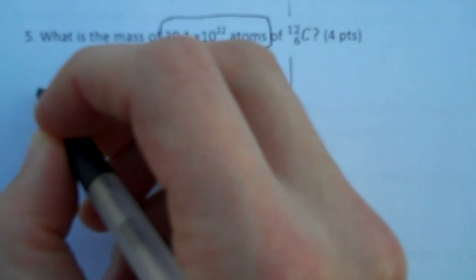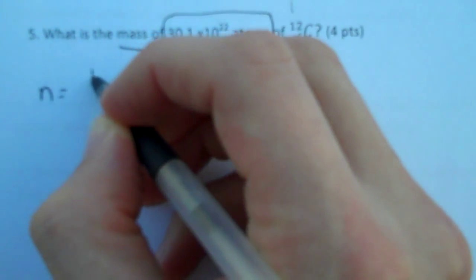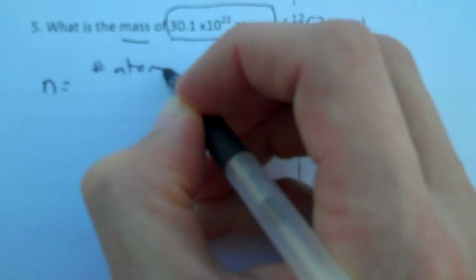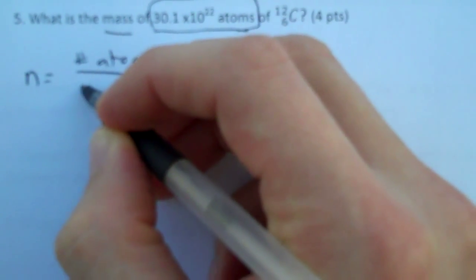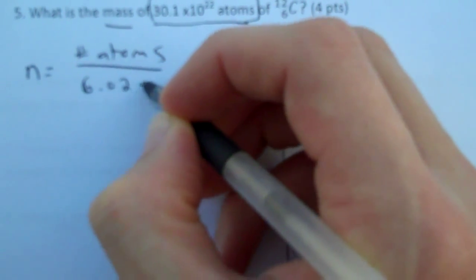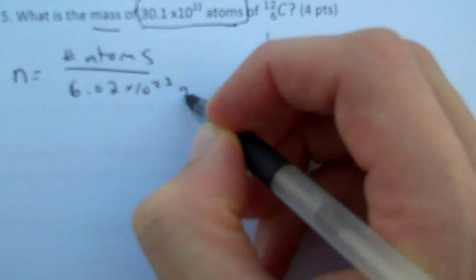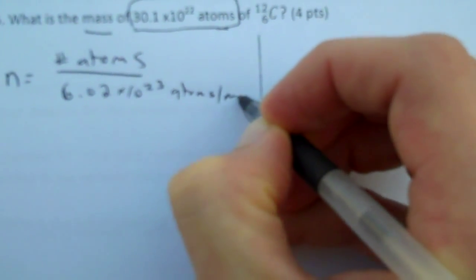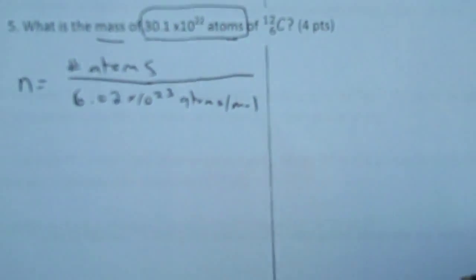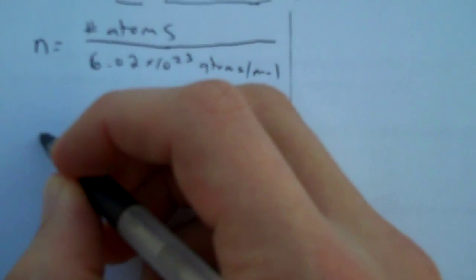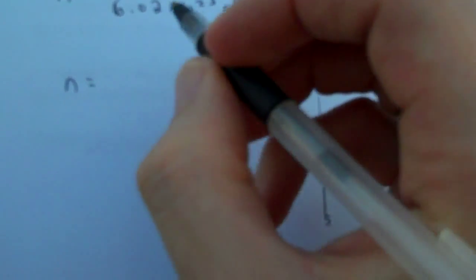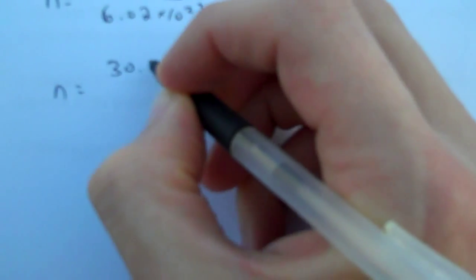So I need to convert this number of atoms into moles. I'm going to use the equation number of moles equals the number of atoms over 6.02 times 10 to the 23rd atoms per mole. So, I have n equals, I plug in what's given to me, 30.1 times 10 to the 22 atoms.